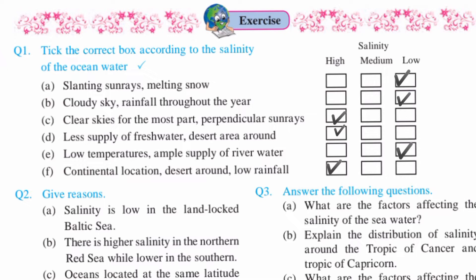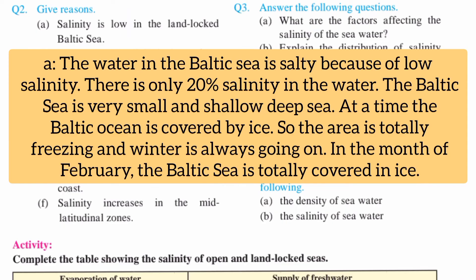E) Low temperature, ample supply of river water — answer is low. F) Continental location, desert around, low rainfall — answer is high. Question number two: give reasons. First — salinity is low in the landlocked Baltic Sea.